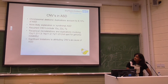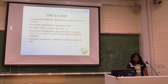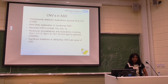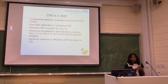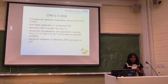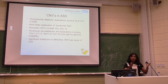In terms of CNVs in ASD, chromosomal deletions and duplications account for about 8-10% of ASD. It's more likely to be an explanation in the syndromic or syndromal ASDs. CNVs we often come across include those on the long arm of chromosome 15, long arm of 22, long arm of 7, etc. Some regions are said to be hotspots with genomic instability, so you often come across recurrent microdeletions or duplications. There can be significant limitations to attributing CNVs as the sole cause of ASD.